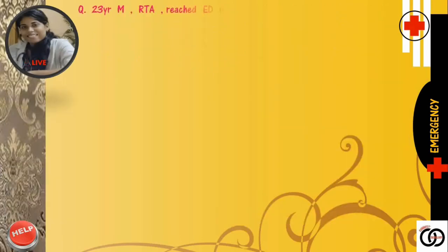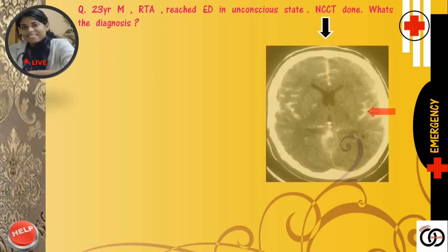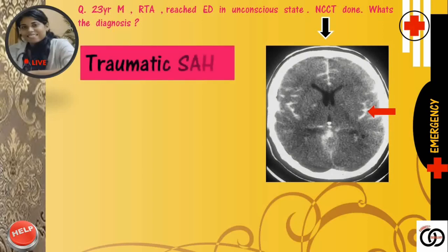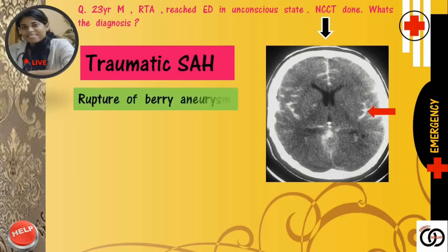Next question: A 23-year-old male met a road traffic accident and reached the emergency department in an unconscious state. NCCT was done. See the scan — can you appreciate the sulcal linear hyperdensity? These are actually the sulci filled with blood, i.e. blood is in the subarachnoid space. Yes, that's a case of traumatic subarachnoid hemorrhage. The most common cause of subarachnoid hemorrhage is trauma, but the most common cause of spontaneous non-traumatic SAH is ruptured berry aneurysm.